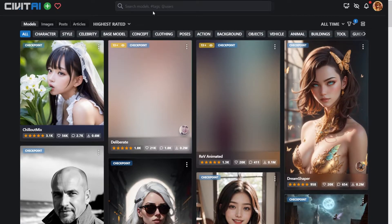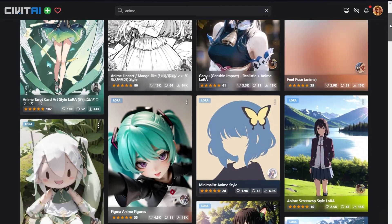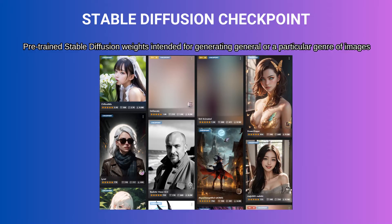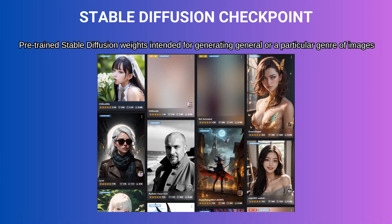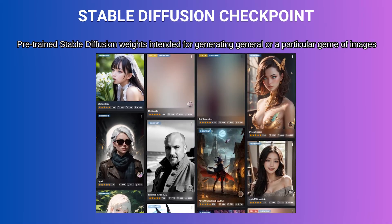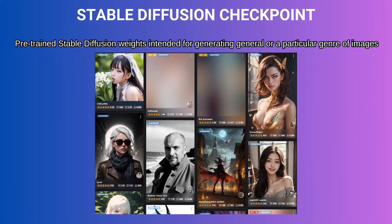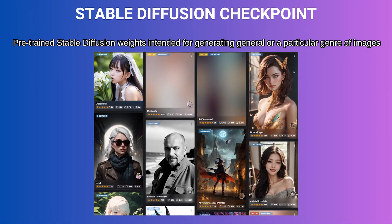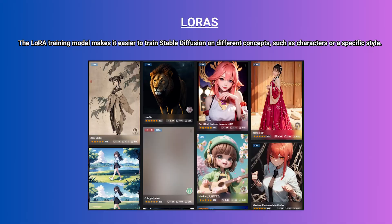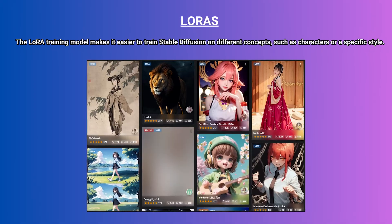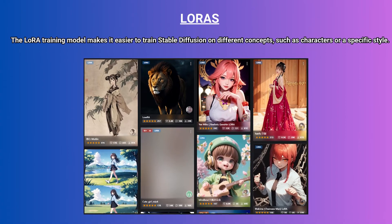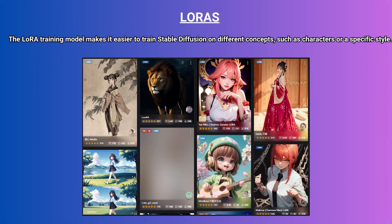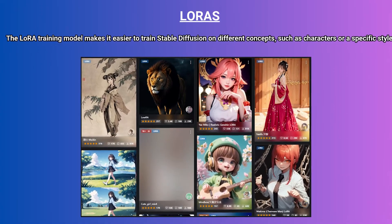First off, there are models and then there are LoRAs. Models are what we use to generate art related to a specific niche like fantasy, anime, or realistic art. But LoRAs are what we use to generate a specific character or for the art to have a specific style.